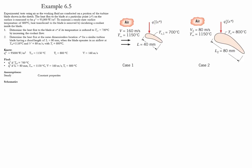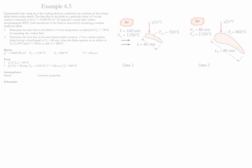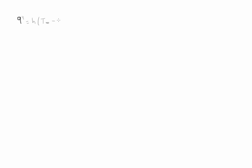We consider this problem to be steady with constant properties. We neglect heat generation and radiation. Let's start with the evaluation of the flux. The original flux is equal to H times (T∞ minus Ts original), where the initial Ts is equal to 800. Therefore, H is equal to q'' divided by (T∞ minus Ts).